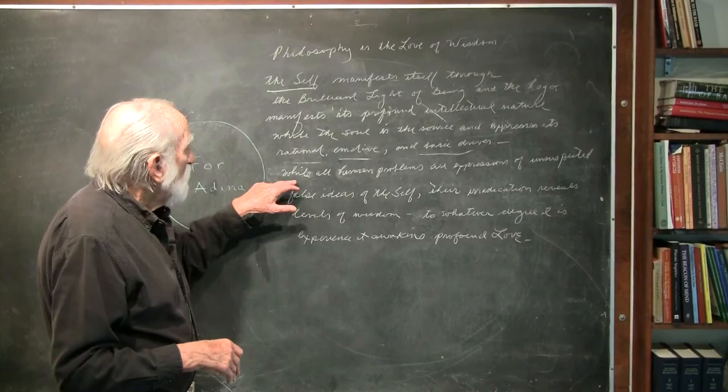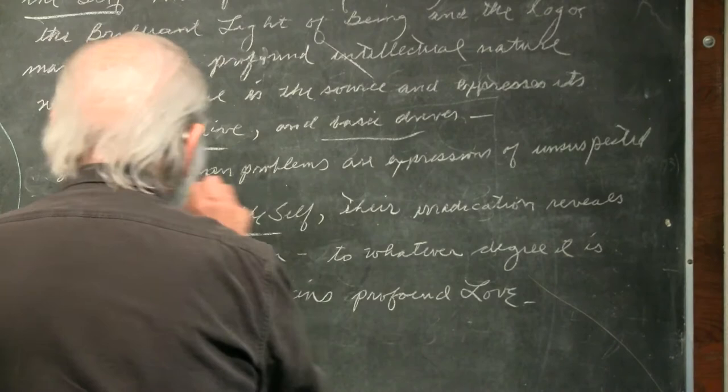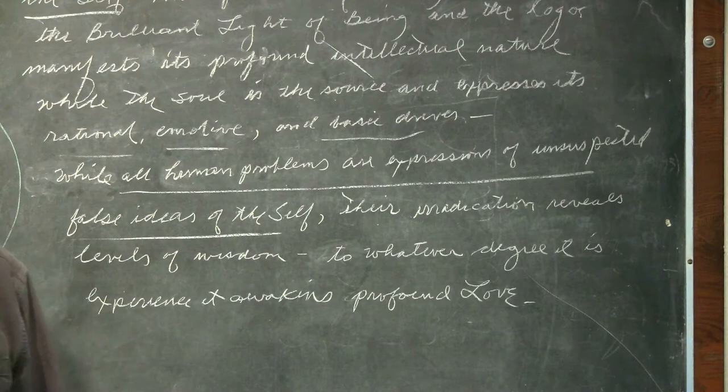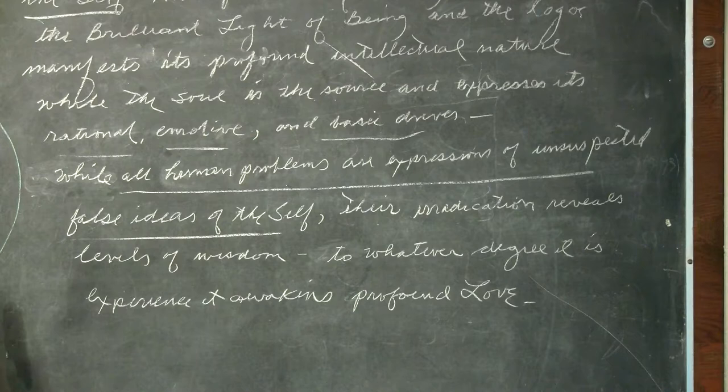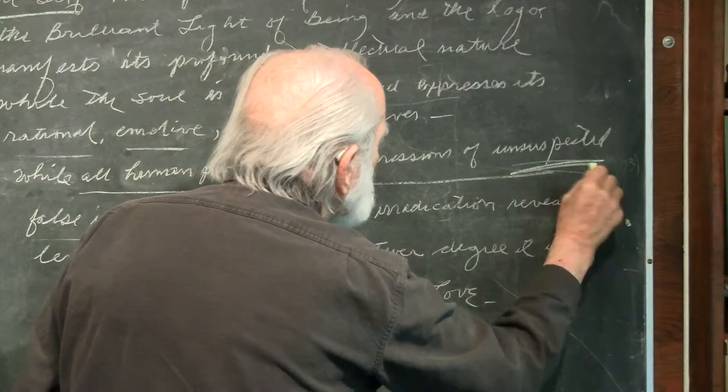So right now then, let's take a look at human problems. All human problems are expressions of unsuspected false ideas of the self. That is a primary notion. The reason you have problems is because fundamentally you're acting out what is implied by and inherent in a false idea of the self that you happen to have. And the difficulty is that you don't realize it. Therefore, it is unsuspected.